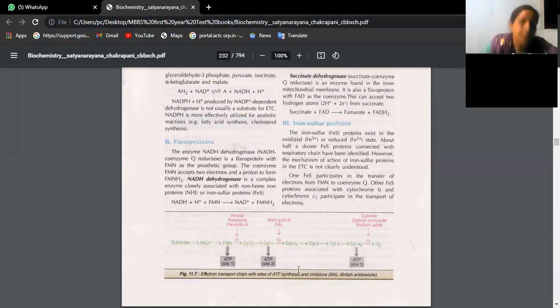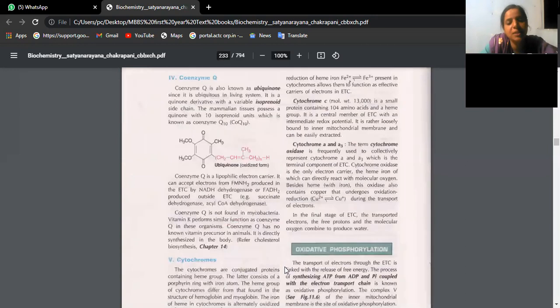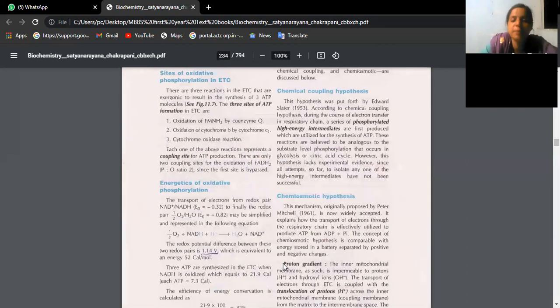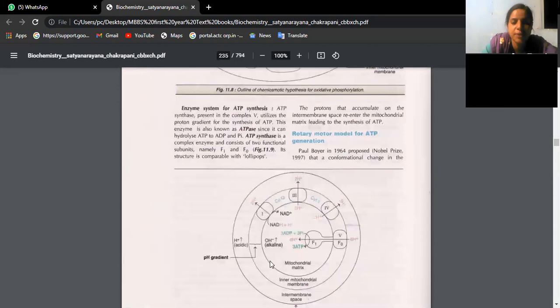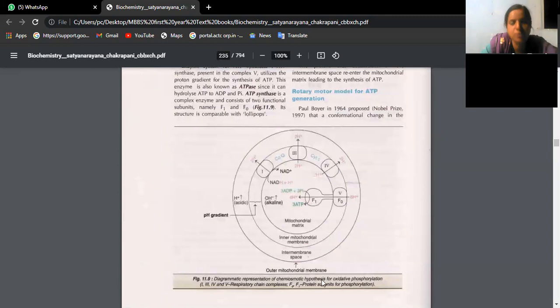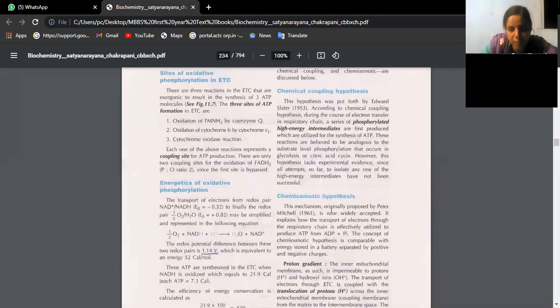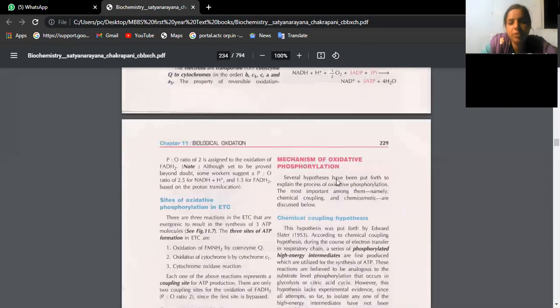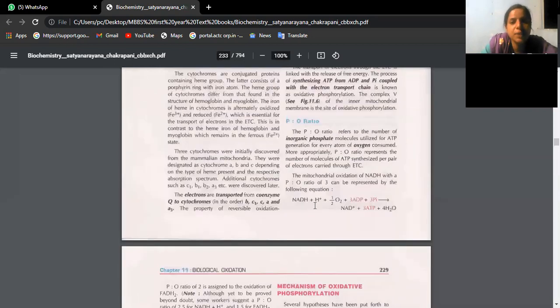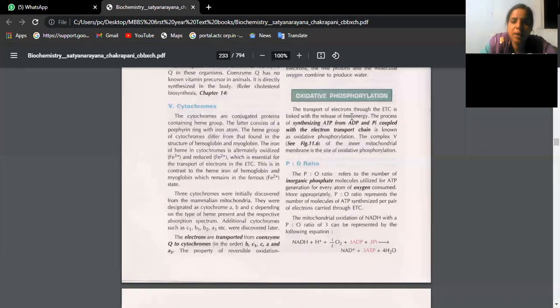Now, chemiosmotic hypothesis in the sense, coupling of ADP with high energy phosphate to produce ATP. That is chemiosmotic hypothesis. See the definition first. Chemiosmotic hypothesis is nothing but, it's a mechanism. Basically, this is oxidative phosphorylation. The meaning of oxidative phosphorylation is nothing but, you see there is coupling of, that means union of ADP with high energy phosphate to form ATP.